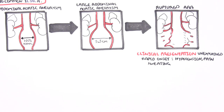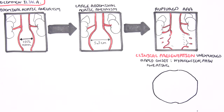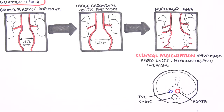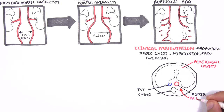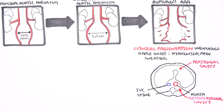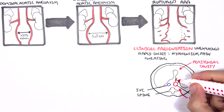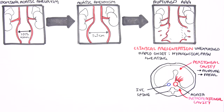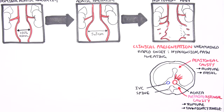Rupturing into the peritoneal cavity has a poorer prognosis. Let us take a closer look. Here is a cross section of the abdomen — this is the vertebrae, the bone, the aorta, and the inferior vena cava. In front of the aorta is the peritoneal cavity where our intestines are. Behind is the retroperitoneal area, where our kidneys are. If the AAA ruptures anteriorly into the peritoneal cavity, this is quite fatal. Rupturing posteriorly into the retroperitoneal cavity, the patient can be transiently stable but will rapidly decline without surgery.